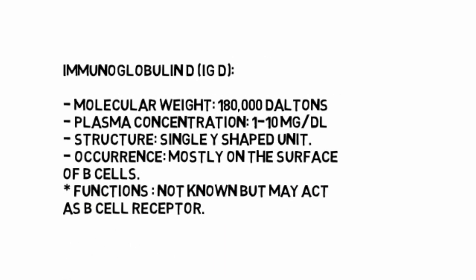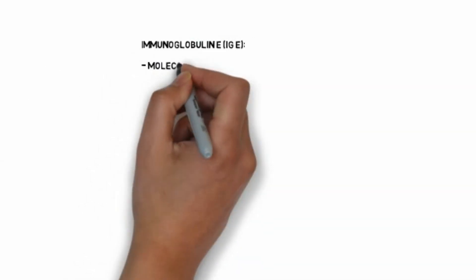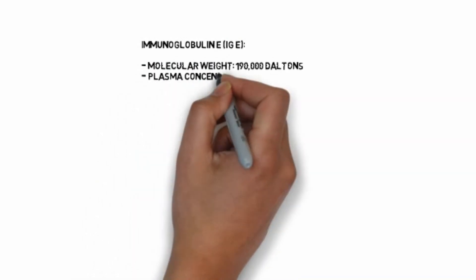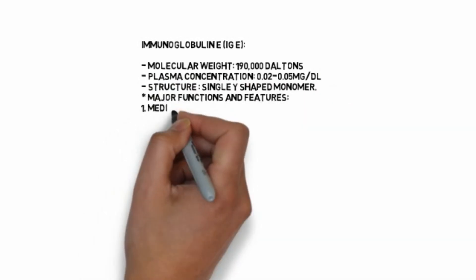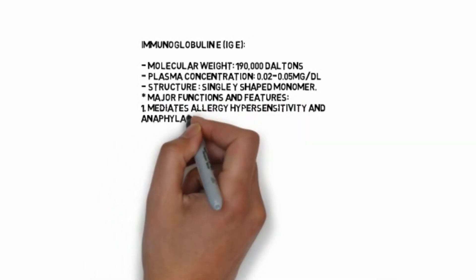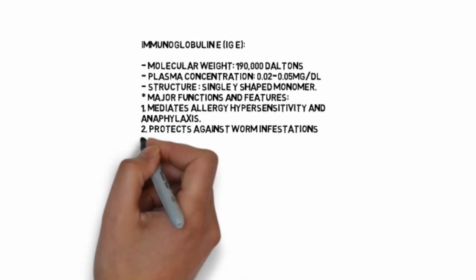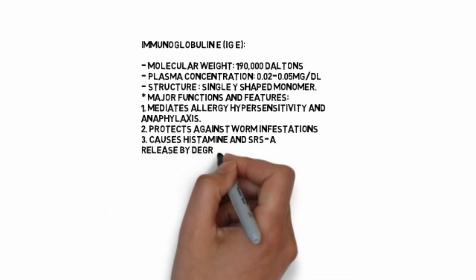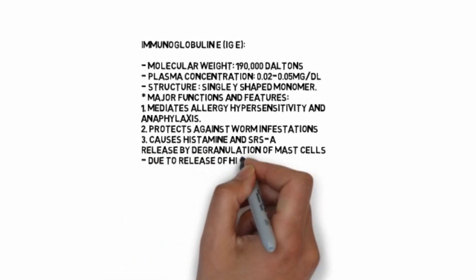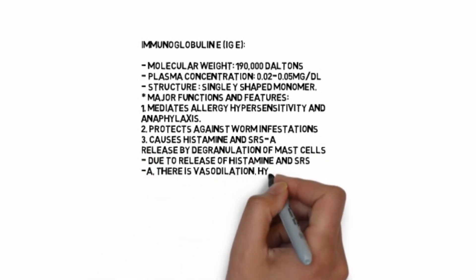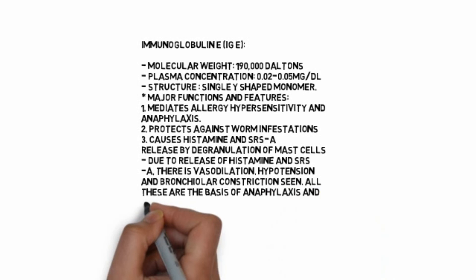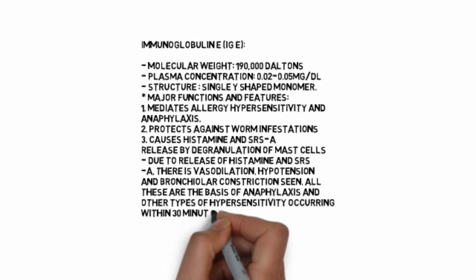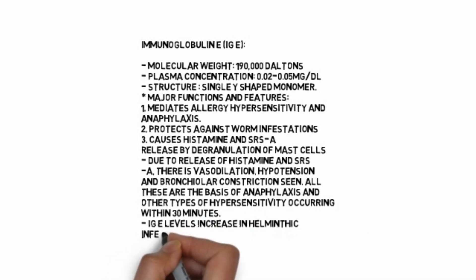Immunoglobulin IgE: molecular weight 190,000 daltons, plasma concentration 0.02 to 0.05 mg per deciliter. Structure: single Y-shaped monomer. Major functions and features: mediates allergy, hypersensitivity, and anaphylaxis. Protects against worm infestation. Causes histamine and SRS-A release by degranulation of mast cells. Due to release of histamine and SRS-A, there is vasodilation, hypotension, and bronchiolar constriction. All these are the basis of anaphylaxis and other types of hypersensitivity occurring within one to three minutes. IgE level increases in helminthic infections and anaphylaxis.